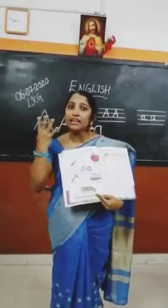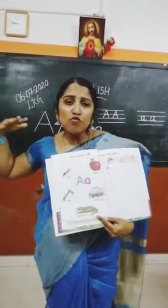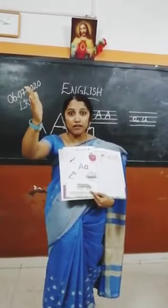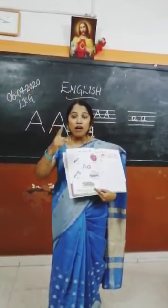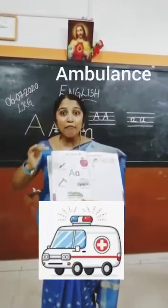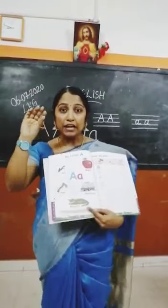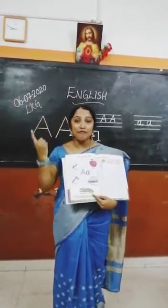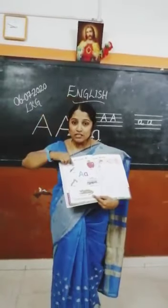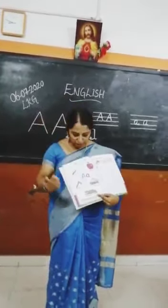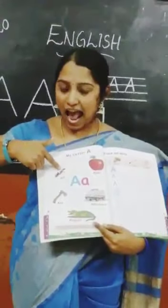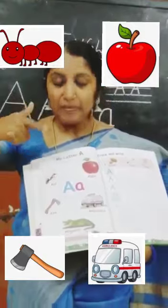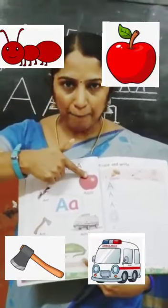It is a vehicle. It moves on the road. It moves really fast. When we move on the road, we have to give some space to that vehicle, otherwise we are in trouble. That vehicle's name is ambulance. There is a red light on the top of that vehicle, moving. That vehicle is ambulance. Let's say it one more time — ambulance.